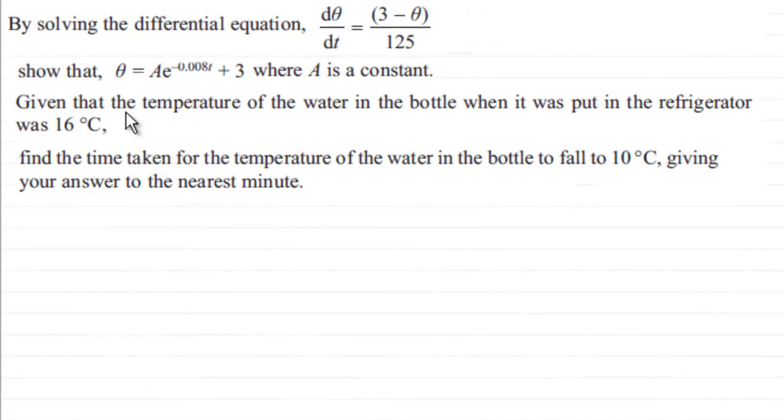Hi, now in the previous part we were told that by solving this differential equation here, show that theta equaled A to the power minus 0.008T plus 3 where A is a constant. And we're now given that the temperature of the water in the bottle when it was put in the refrigerator was 16 degrees C. And we've got to find the time taken for the temperature of the water in the bottle to fall to 10 degrees C, giving our answer to the nearest minute.